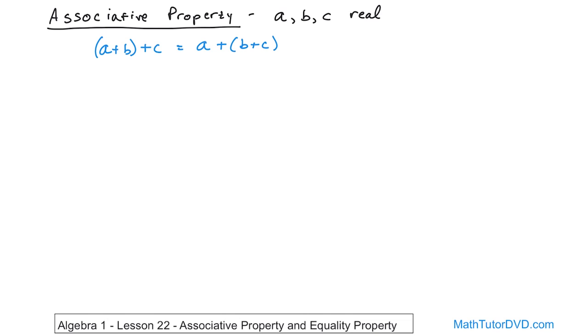What the associative property is telling you is that you have three numbers, A, B, and C. Notice they're all added together. But when you have the parentheses here, it's forcing you—because remember we talked about order of operations. When you have parentheses, you have to do what's inside the parentheses first.